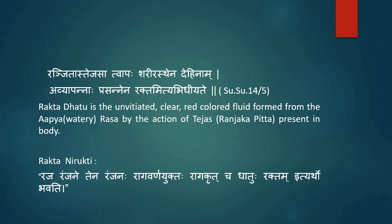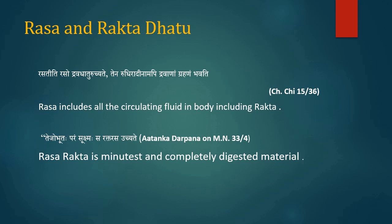Rakta is derived as Raj Ranjane, meaning that which acquires red color through the process of ranjana (coloring). While describing the circulation of Rasa by the action of Vyanvayu, i.e. a subtype of Vatdosh, Chakramani has explained the term Rasa as standing for all the circulating fluids, including the blood.